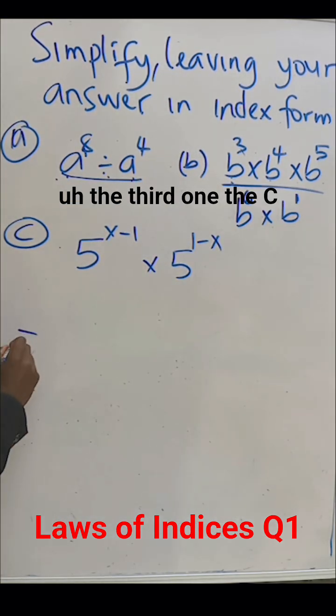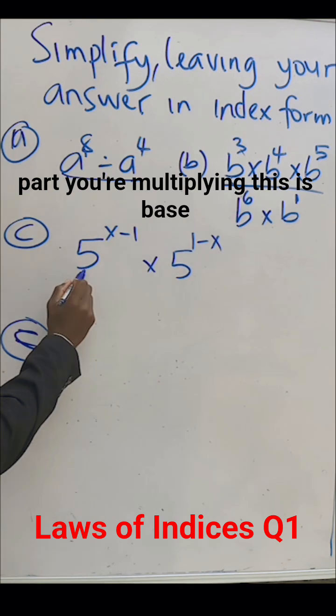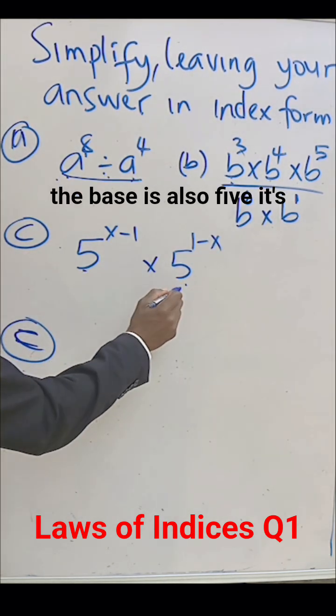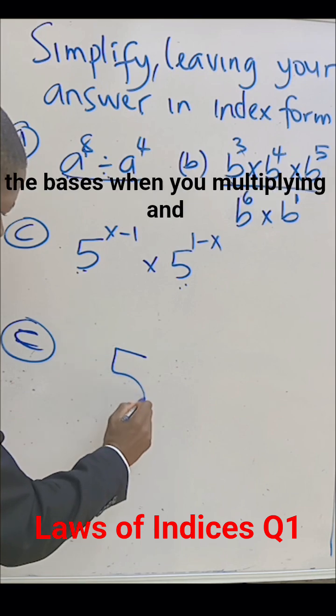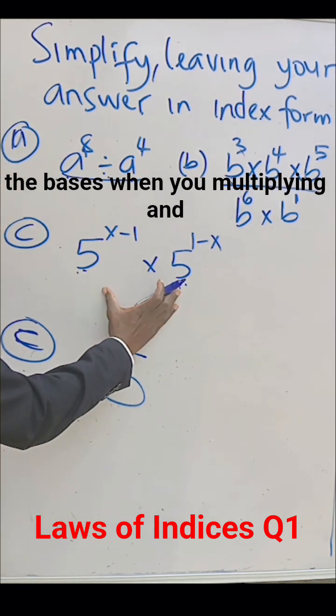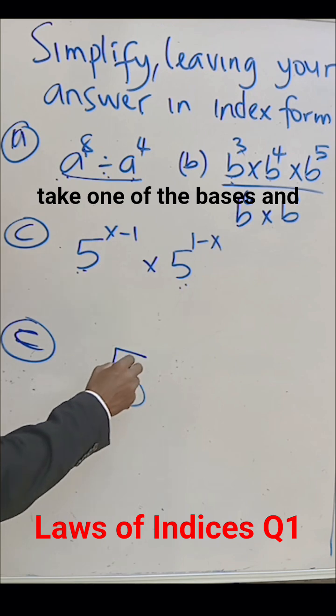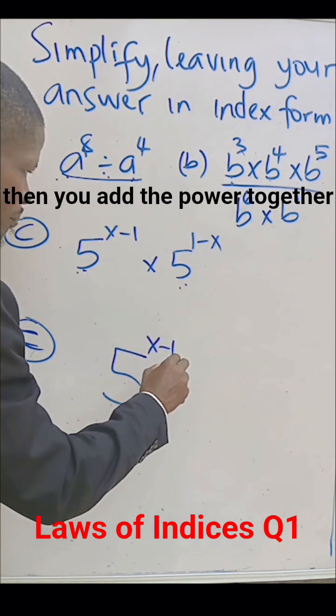The third one, the C part. You are multiplying, this is the base, the base is also 5, it's 5 here. You take one of the bases. When you are multiplying and you have the same base, you take one of the bases and then you add the power together.